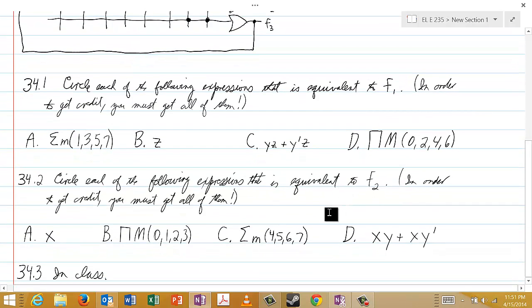34.1 says circle each of the following expressions that is equivalent to F1. And in order to get credit, you must get all of them that are equivalent to F1.